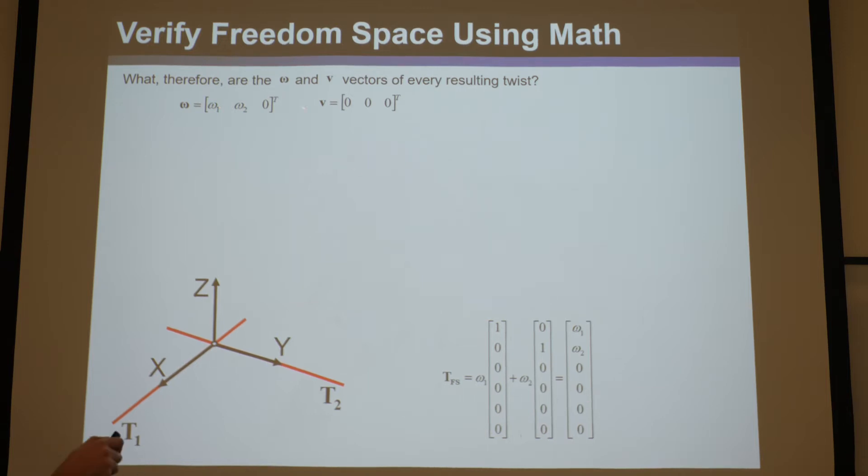Omega 1, omega 2, 0. The bottom 3, it's v, 0, 0, 0. It's a velocity of this point here.